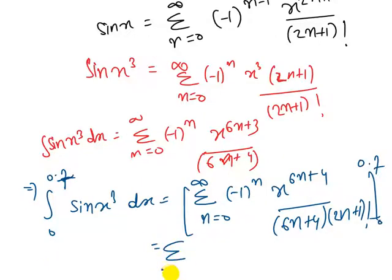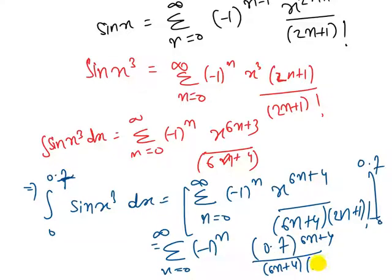So now using the limit 0.7, we have 0.7 to the power 6n plus 4, over 6n plus 4 times 2n plus 1 factorial.